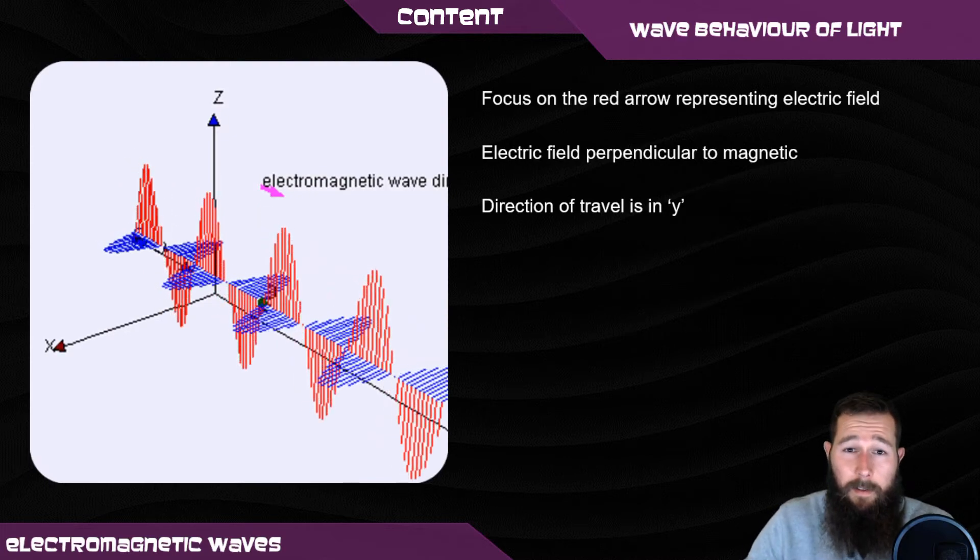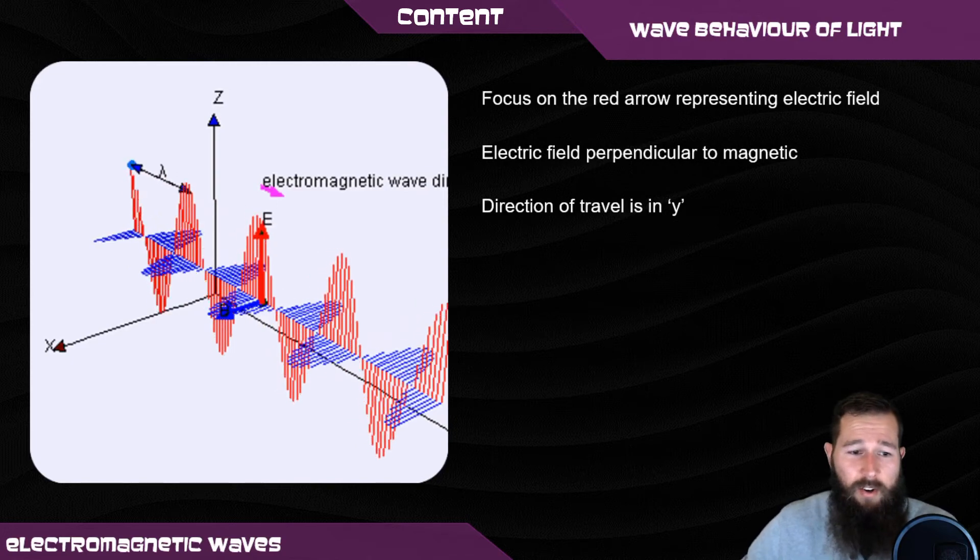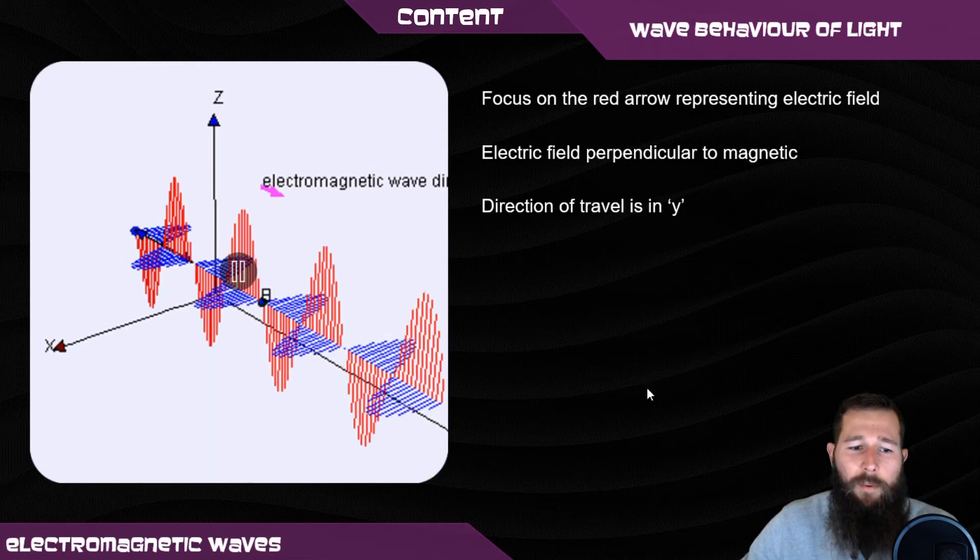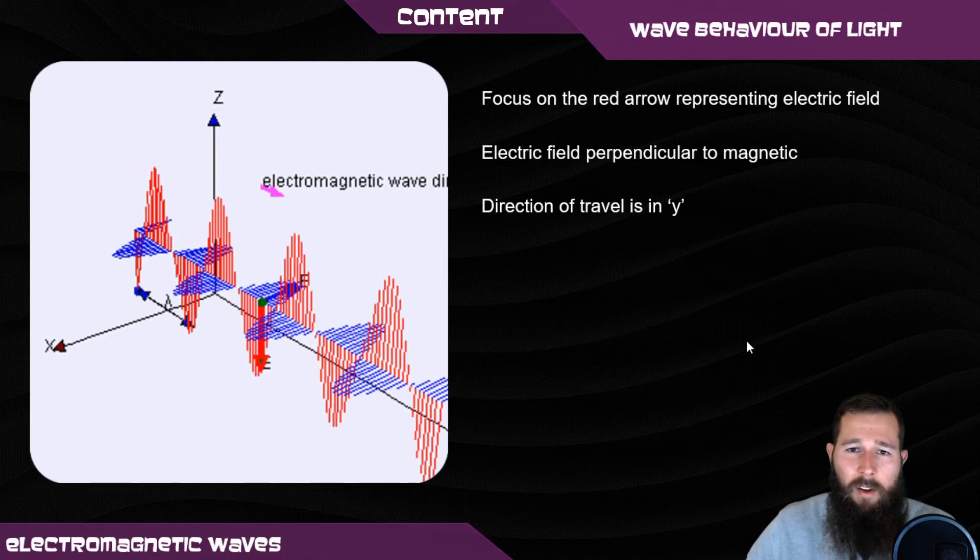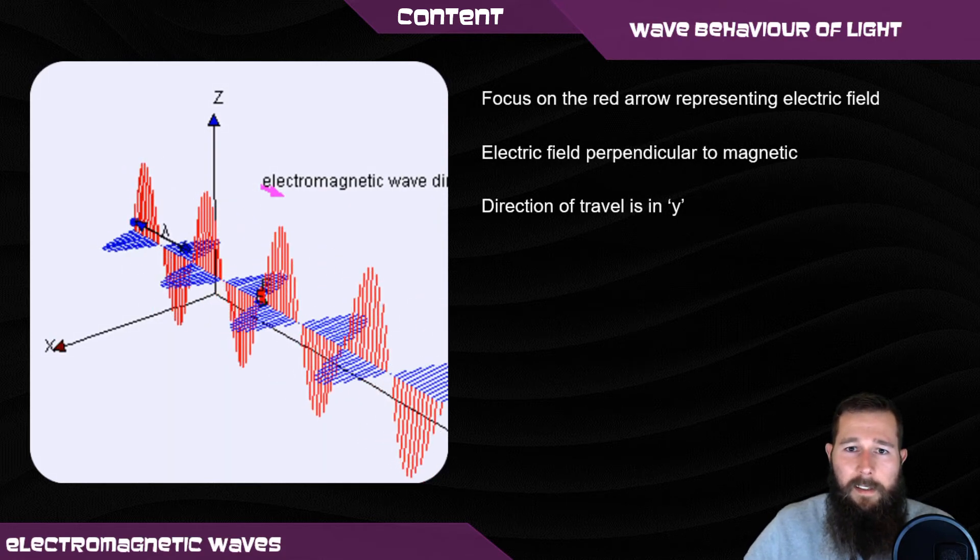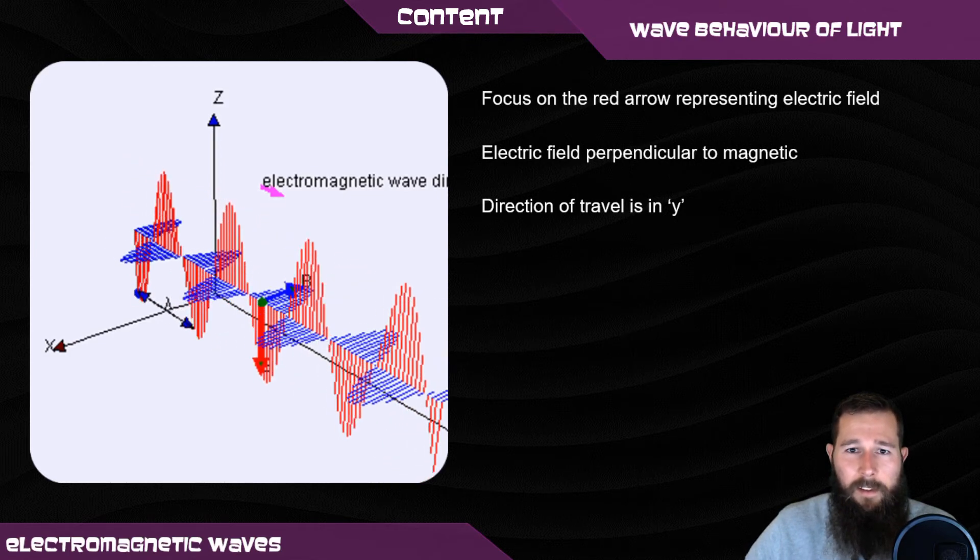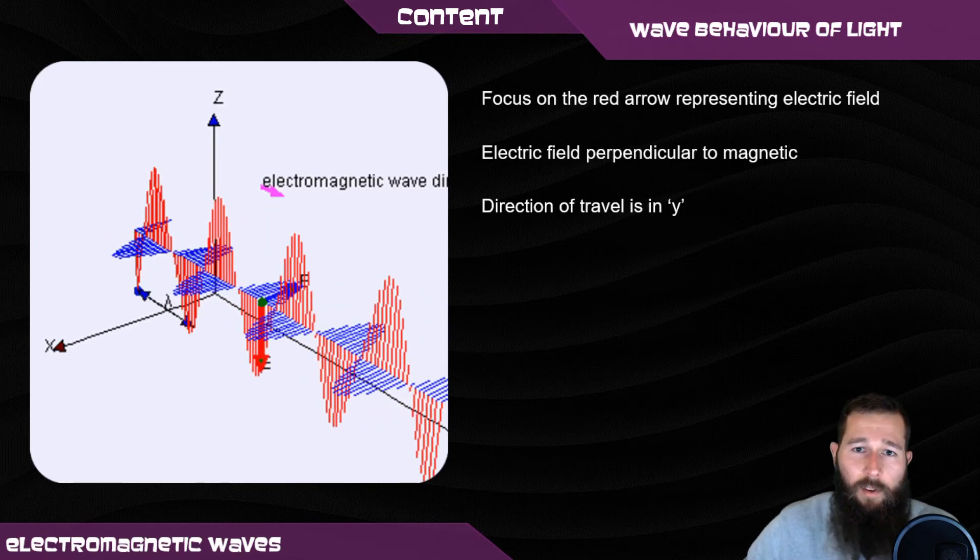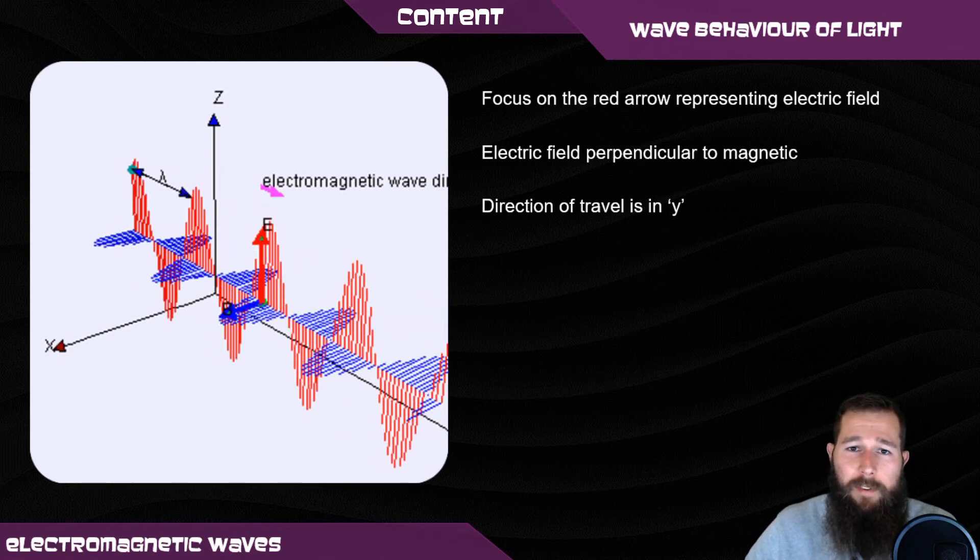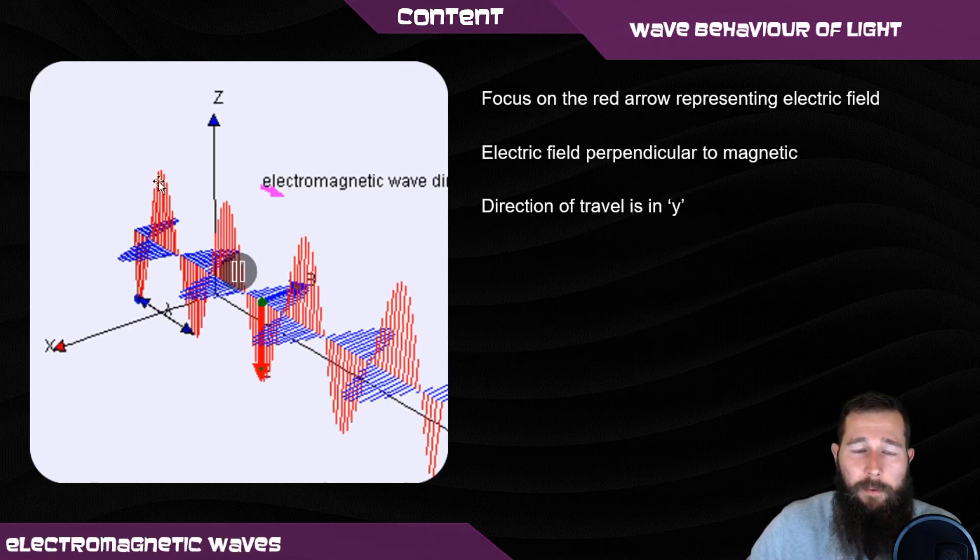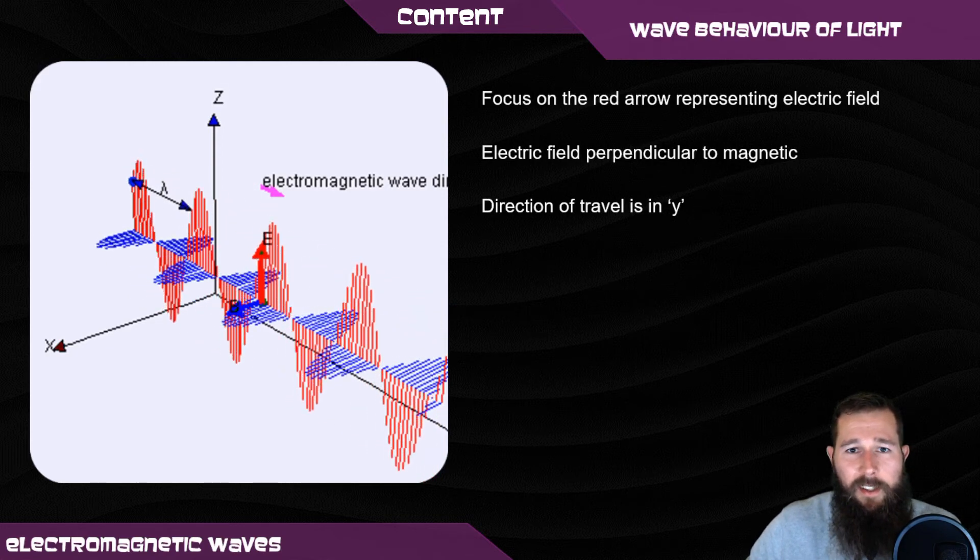Now I'd like to have a look at an animation here just to see what's going on. So first of all, let's focus on the red arrow and we can see it going up and down representing the magnitude of the electric field. You can see this is at right angles to the blue magnetic field and at right angles to the direction of travel. Now looking at the blue arrow, this represents the amplitude of the magnetic field, which is propagated by the electric field, and the other component that we've got is the wavelength, which is not changing.